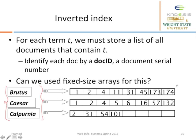The dictionary also contains a list of doc IDs in which each dictionary term appears. For example, the first entry in the dictionary is Brutus, and Brutus appears in documents 1, 2, 4, 11, 31, 45, 173, 174. All these numbers in the list are nothing but doc IDs.